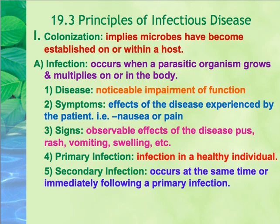Disease occurs in the host only once there is noticeable impairment of function. You're going to see symptoms and signs, but they can be very different. Symptoms are the effects of the disease that are only experienced by the patient — they're not visible. Things like 'I feel sick,' 'I'm nauseated,' or 'my leg really hurts' — something you feel that nobody can quantify. A sign, on the other hand, is an observable effect, such as pus in a tissue, a rash, vomiting, or swelling surrounding damaged tissue.